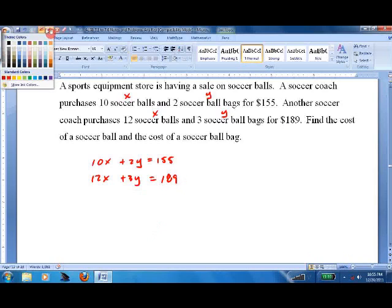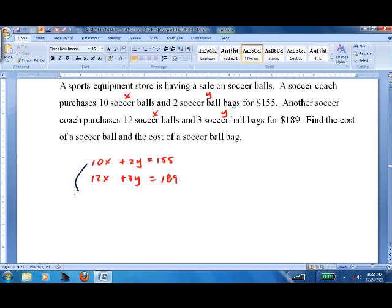So now we're supposed to figure out how much a soccer ball costs and how much a soccer bag costs. I'm going to go with this one times negative 3, and this one times positive 2. So I get negative 30x plus negative 6y equals, need the calculator for this one, negative 465. This one, I get 24x plus 6y. Looks like we did it right. They're going to cancel.